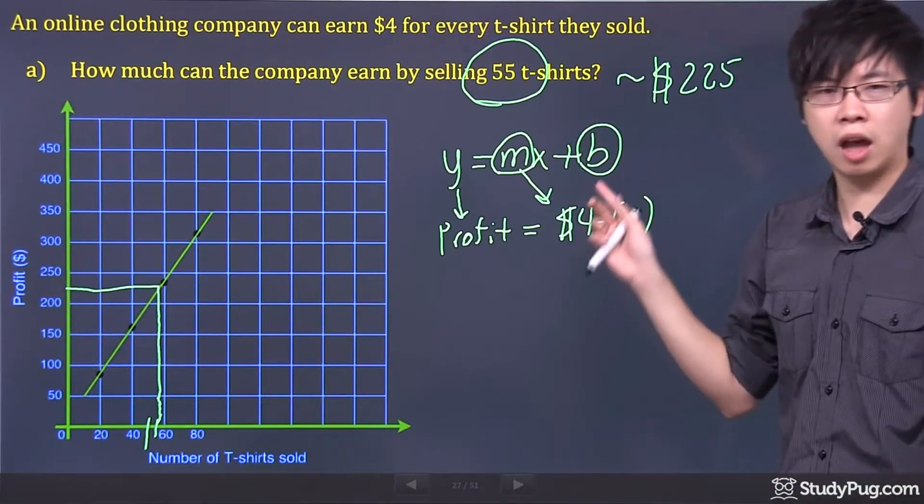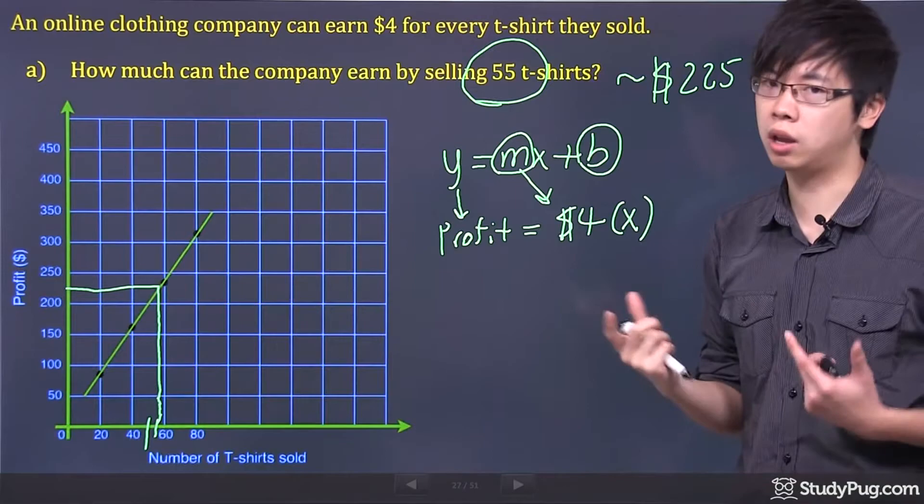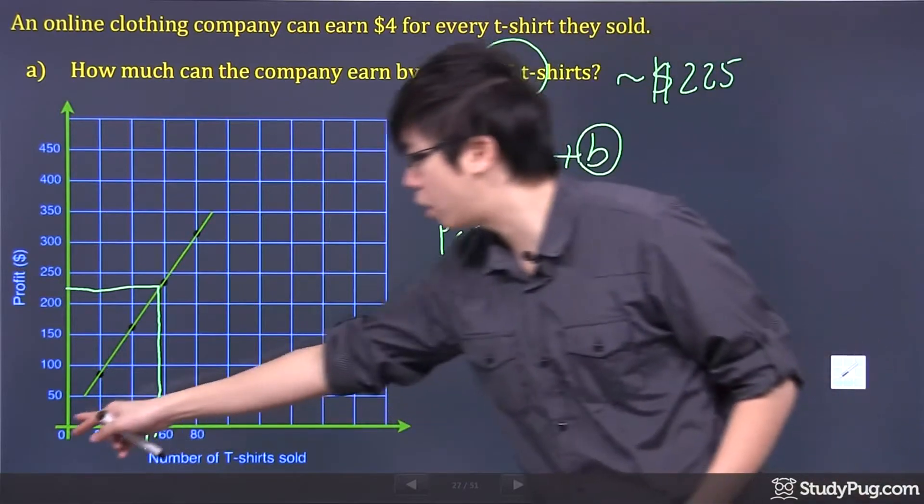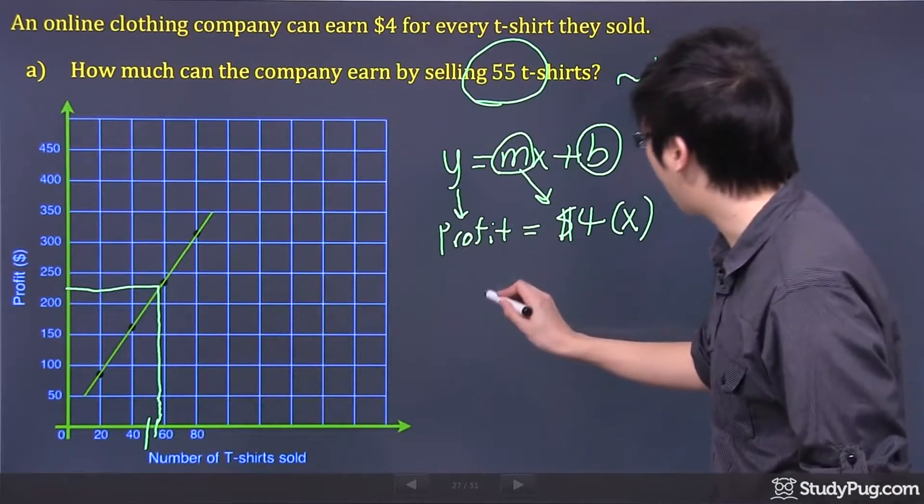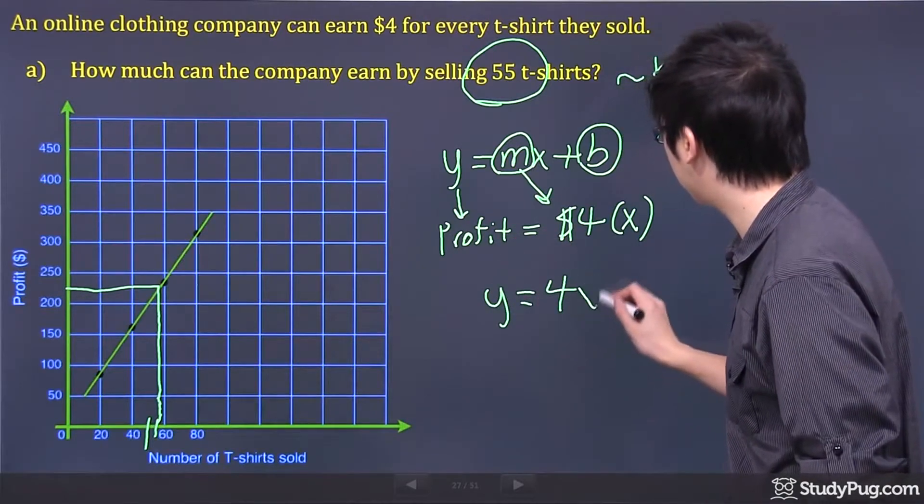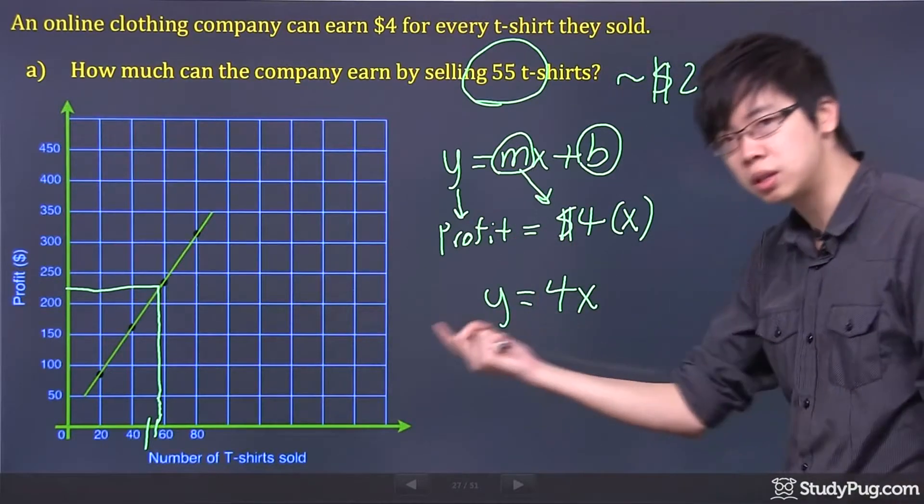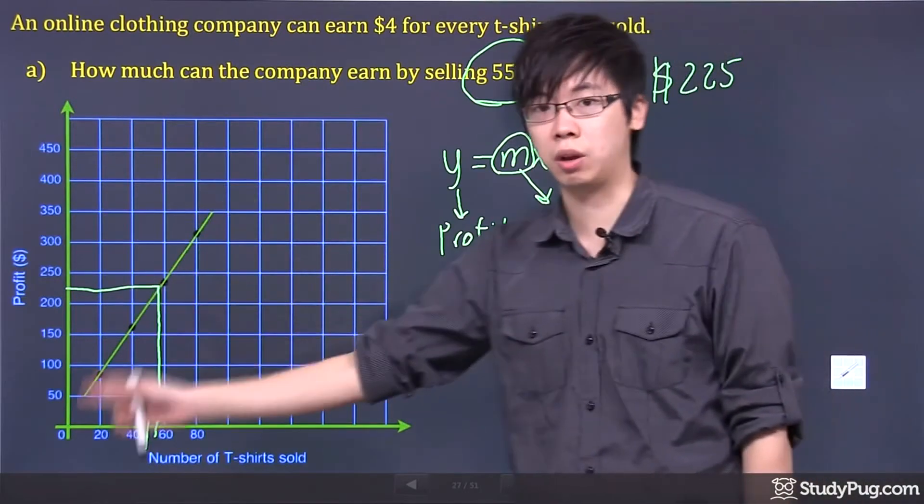The b here is kind of tricky. It actually represents something that we call the y-intercept. Well, in this case, the y-intercept should be a zero, okay? So what that happened is that your y is just equals to 4x. So this is the equation. This is the linear equation for this line right here.